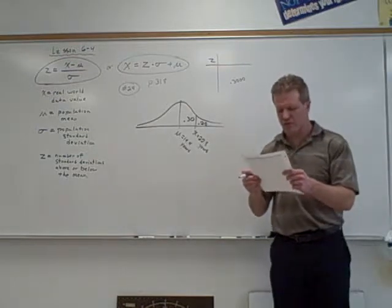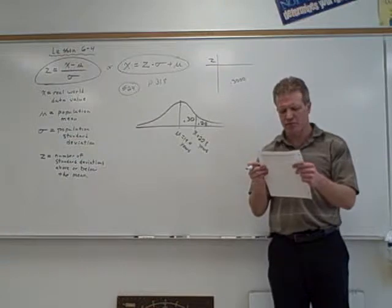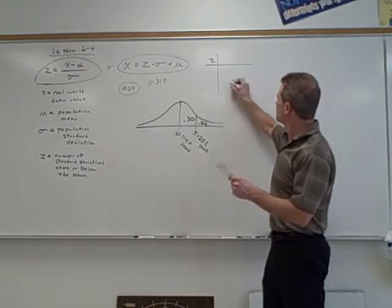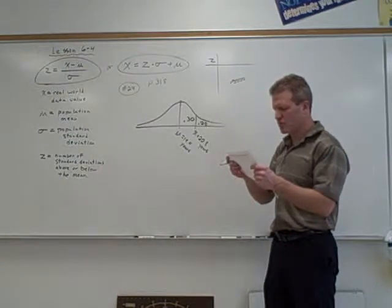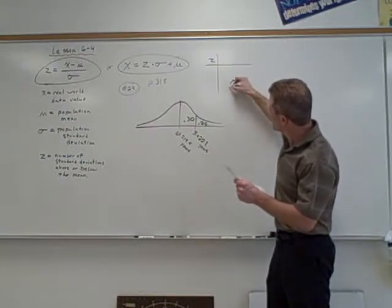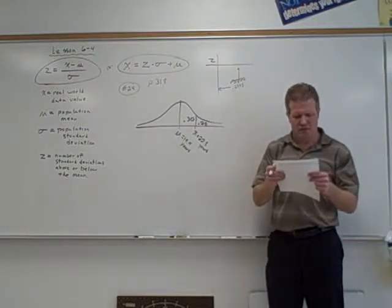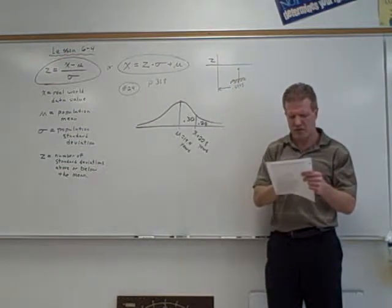So you're going to look for 0.3000. I think the closest thing I see is 0.3289. No, take that back. Let me look again. I see 0.2995. Look to the left, look up, you'll have your z-score. 0.84.